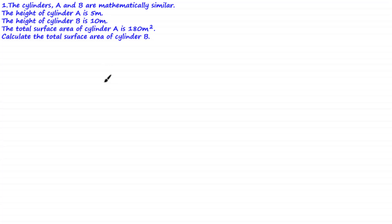Welcome to this tutorial. We're given that cylinders A and B are mathematically similar. The height of cylinder A is 5 meters, the height of cylinder B is 10 meters, and the total surface area of cylinder A is 180 meters squared. Calculate the total surface area of cylinder B.